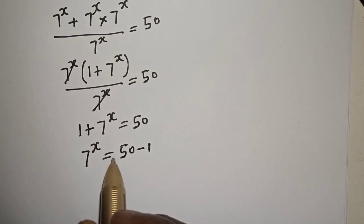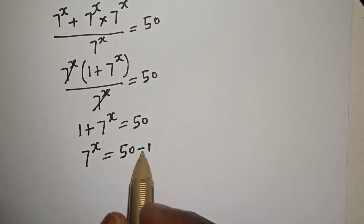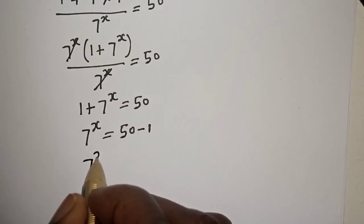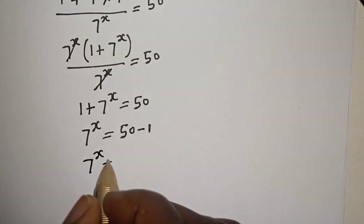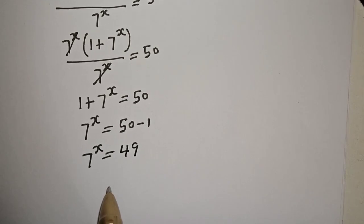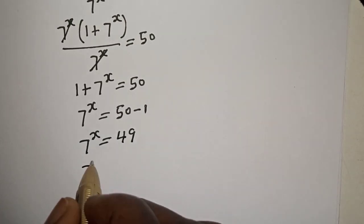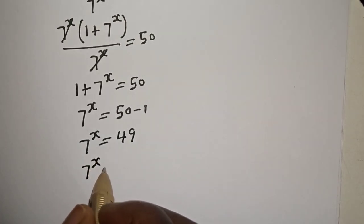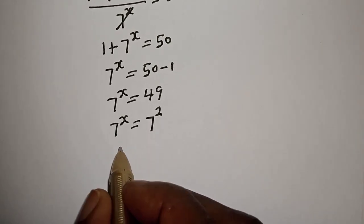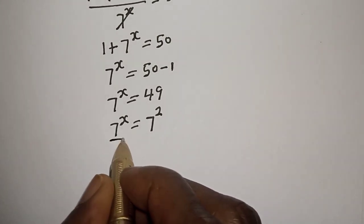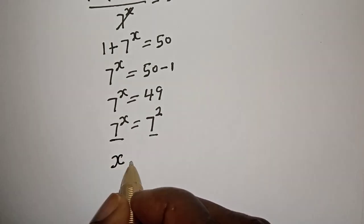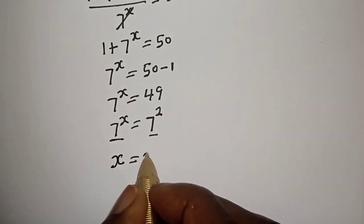So 7 raised to power s is equal to 50 minus 1, which is 49. Therefore 7 raised to power s is equal to 7 squared. Since we have the same base 7, we work with the exponents, giving us s is equal to 2. And this is the final answer.